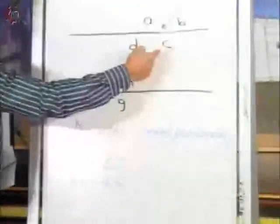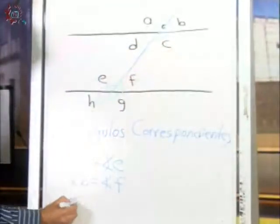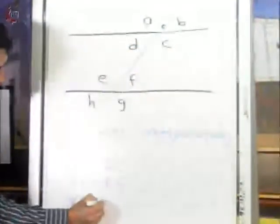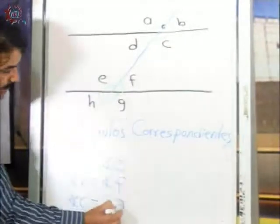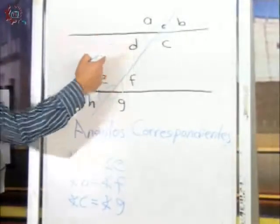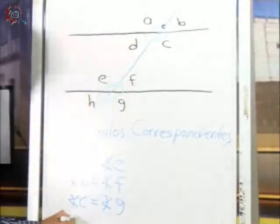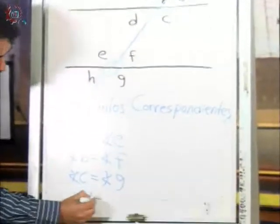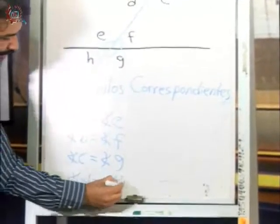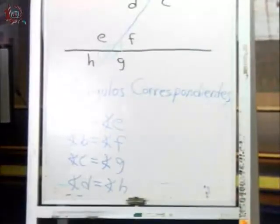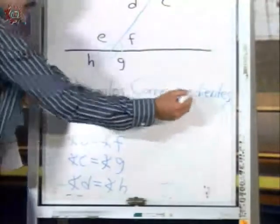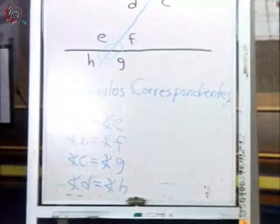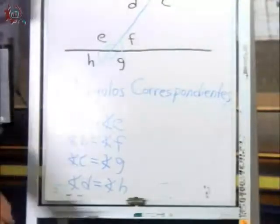El C con el G. Ángulo C corresponde con el ángulo G. Y el D con el H. Ángulo D corresponde con el H. Ya tenemos definido que son los ángulos correspondientes y que tienen la igualdad.